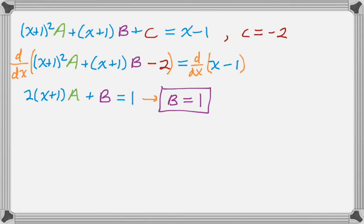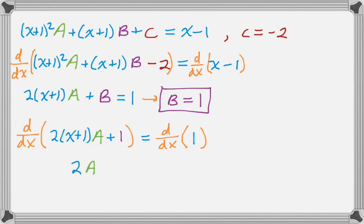So I know what b is. I know what c is. I still need to find a. So what I will do is take the derivative of 2 the quantity x plus 1 A plus 1, which I've replaced the b with 1. And then take the derivative of 1. So I'm just repeating the process again with this new reduced value. So on the left hand side I get 2A. On the right hand side I get 0, which means that a must be 0.